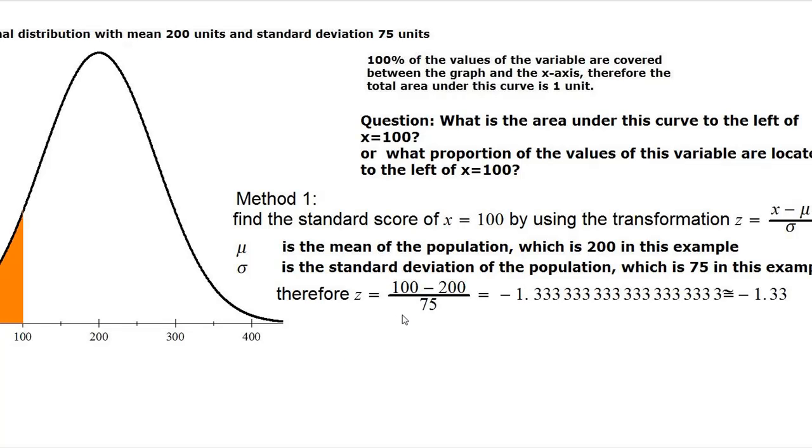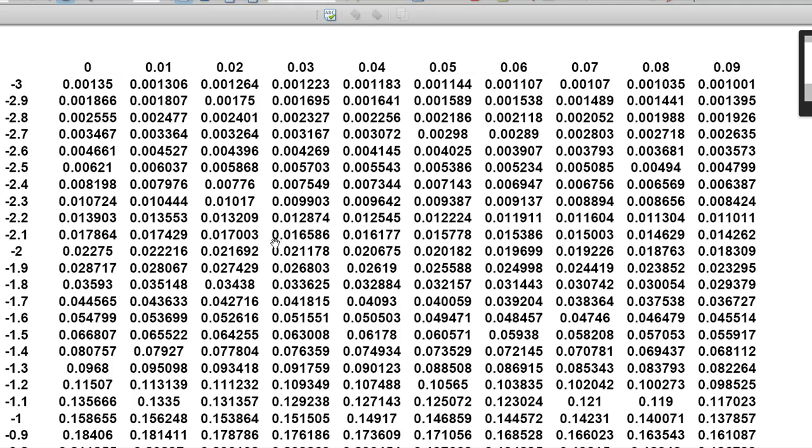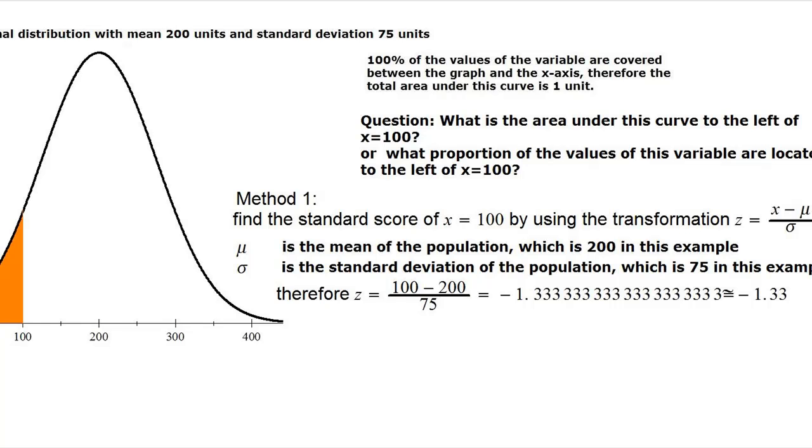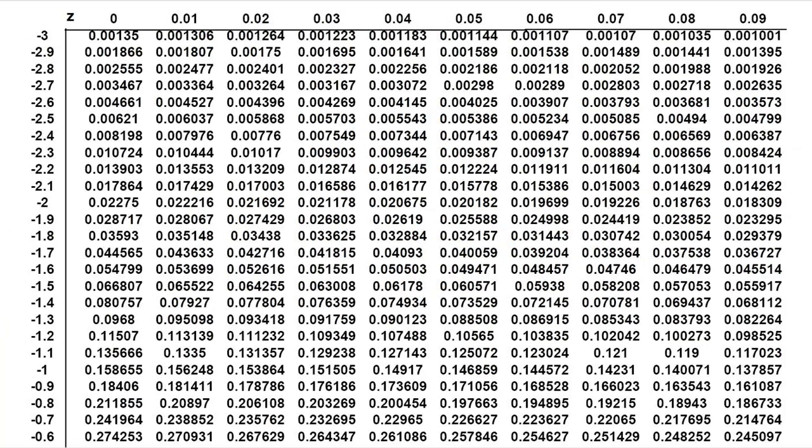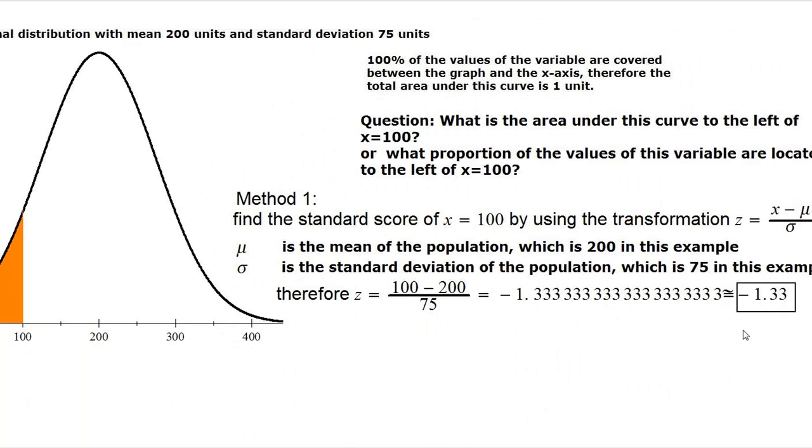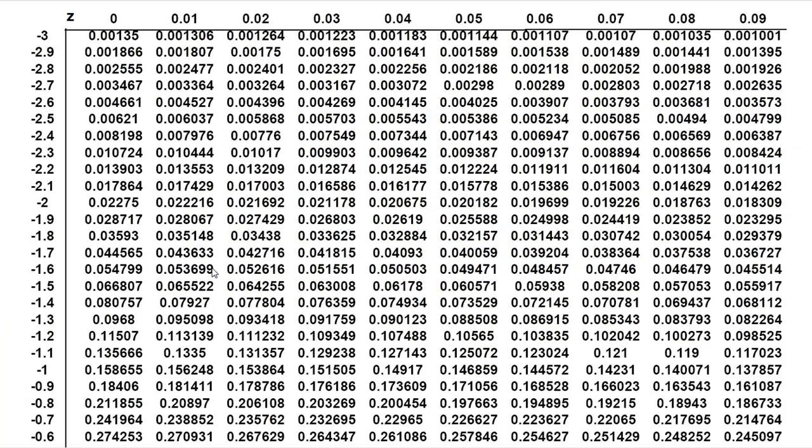So what you do, first you compute z by substituting x equals 100, and that comes out to be approximately negative 1.33. Then you can use a table, this typical looking cumulative normal curve areas table, and you will use it in the following manner. You look at negative 1.33, and then go to the table.